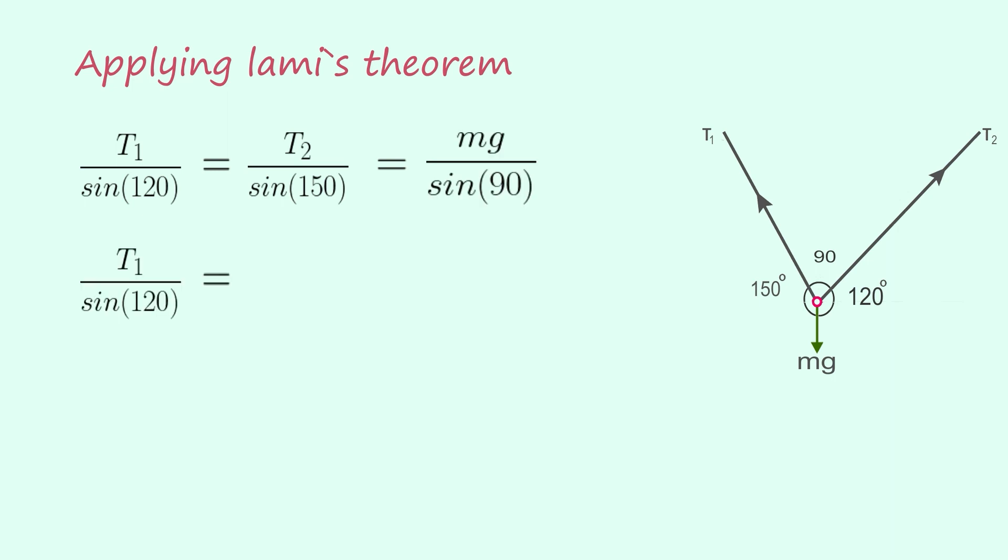T1 equals Mg into sin 120, that is T1 equals root 3 by 2 Mg.